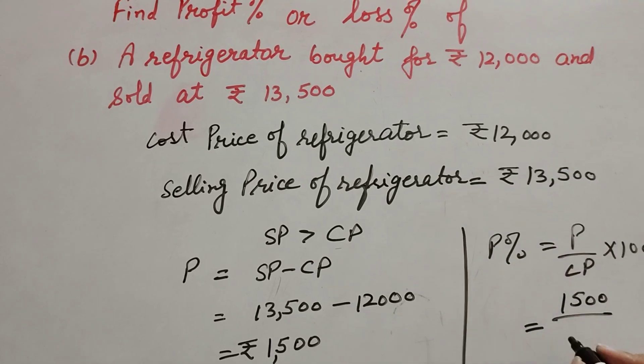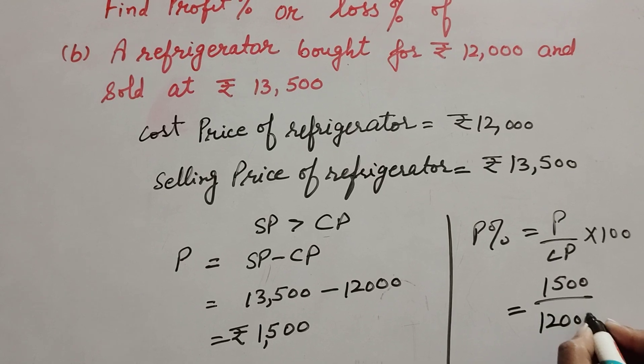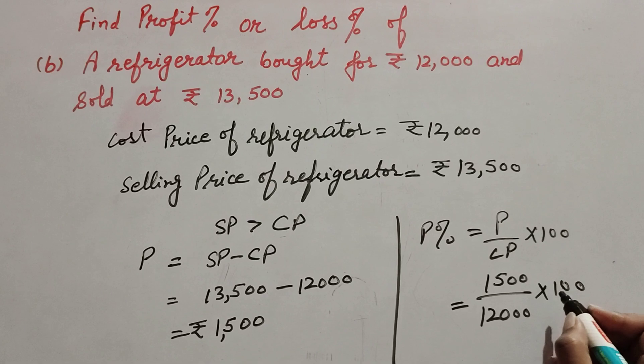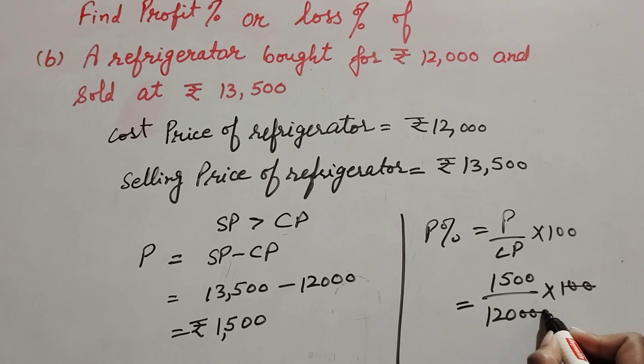That is 1,500 over 12,000 multiplied by 100. We have 1,500 in the numerator and 12,000 in the denominator.